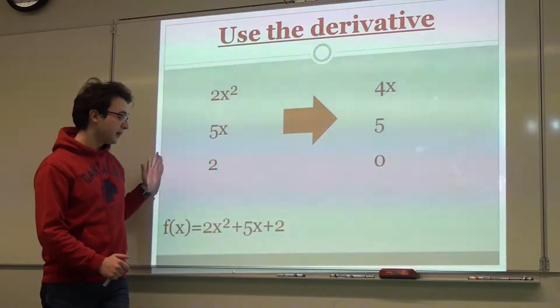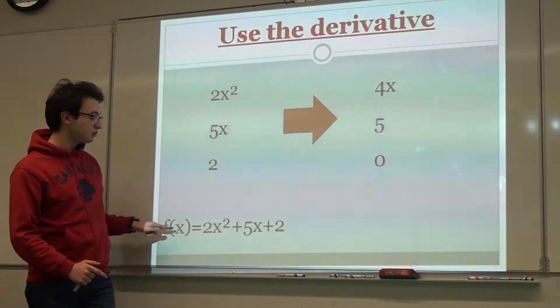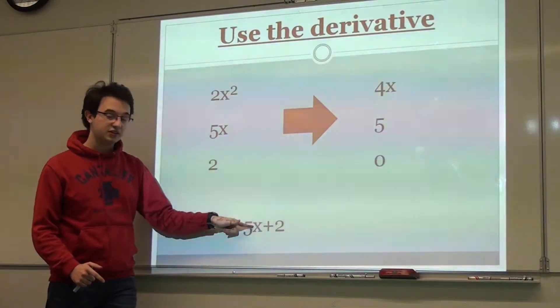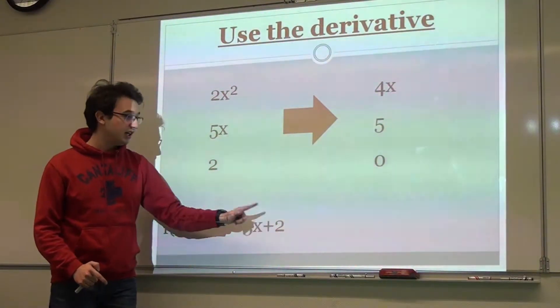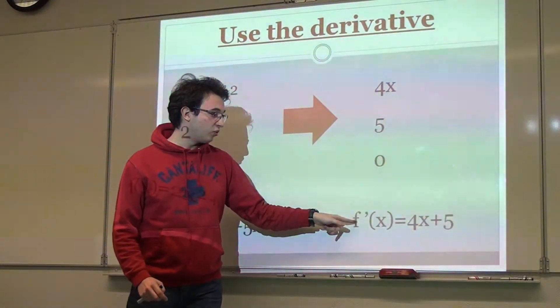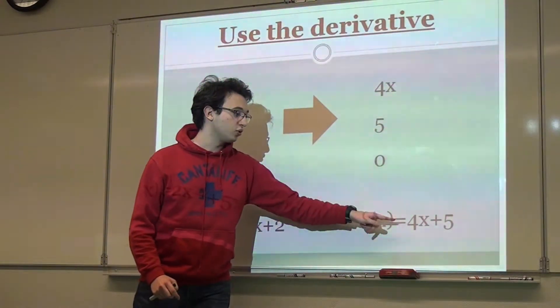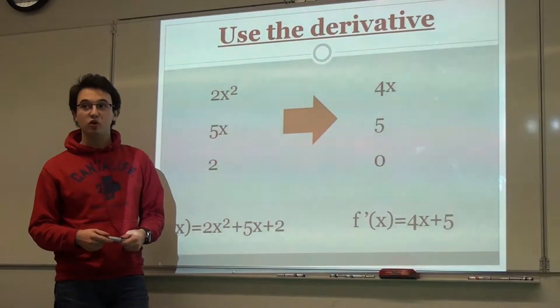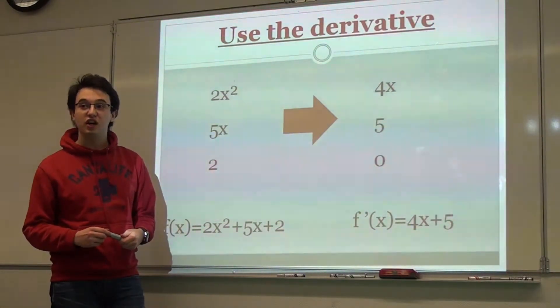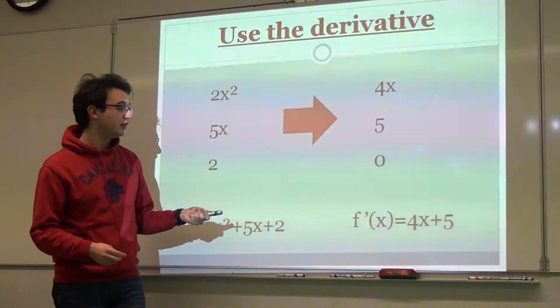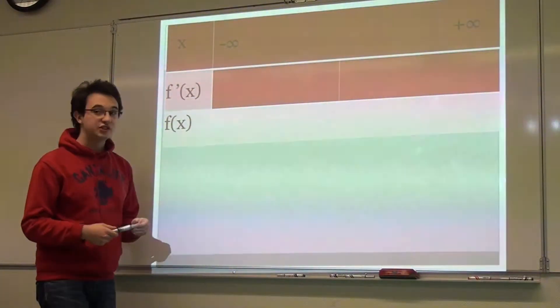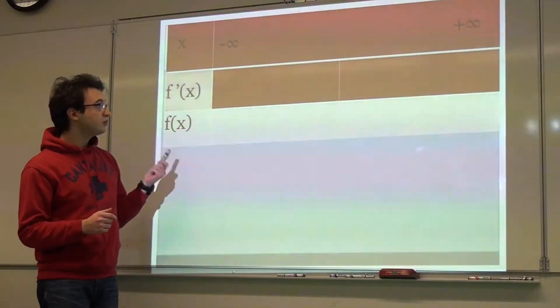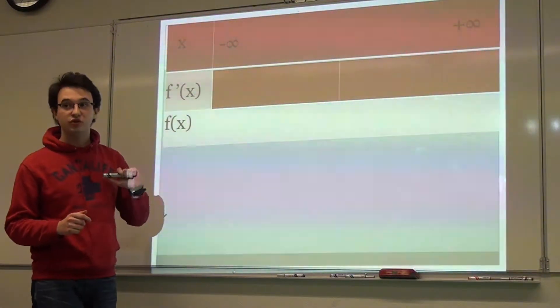So the derivative of f(x) = 2x² + 5x + 2 is f'(x) = 4x + 5. Now I'm going to draw a chart to find the sign of the derivative. To find the sign of the derivative, I need to compute when the derivative equals 0.